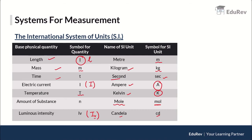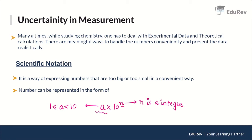Next is uncertainty in measurement. When we study chemistry, we deal with experiments and also deduce some theoretical formulas. We get data from both theoretical work and experiments, but the question is: how do we represent this data in a meaningful and realistic way? For that, we use some methods — the first being scientific notation.